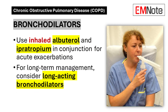In the acute setting of COPD exacerbations, the combination of inhaled albuterol and ipratropium is particularly effective. This dual approach provides rapid bronchodilation through complementary mechanisms of action. For long-term management, clinicians should consider transitioning patients to long-acting bronchodilators, which offer sustained symptom relief and improved lung function over time.